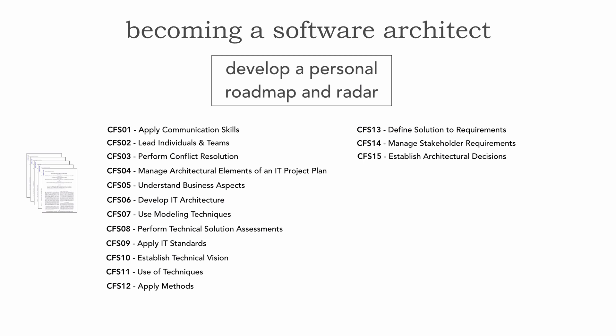CFS 15 is probably one of the more difficult ones: establishing architectural decisions. I did a prior video on this where I discussed the use of architecture decision records as a way of documenting architectural decisions — a fantastic way of gaining proficiency in CFS 15. CFS 16 covers validating and ensuring conformance of solutions to the architecture, which I discussed in lesson 86 as a core expectation. The last one in this section is performing as a technology advisor.